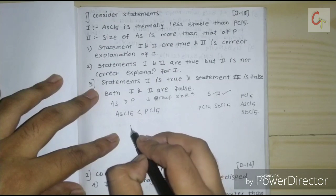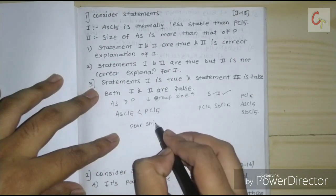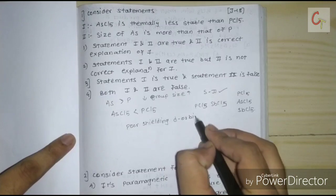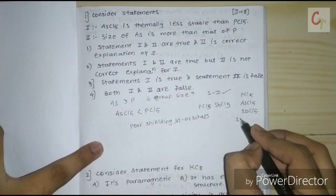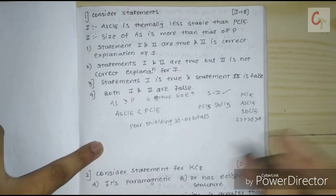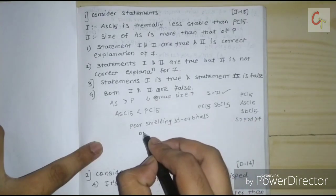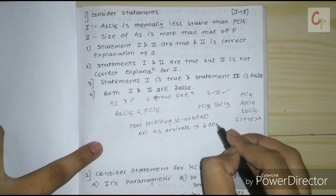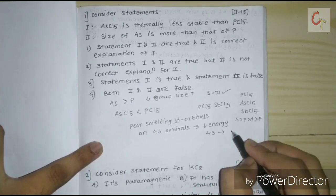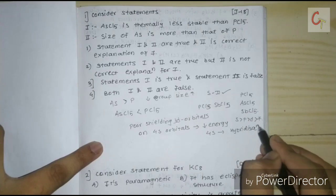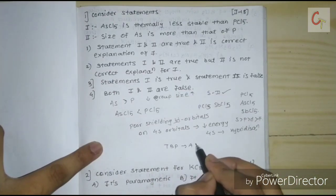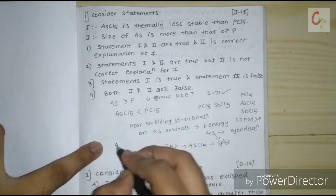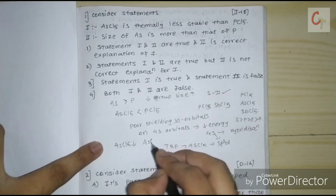The reason for AsCl5's lower stability is the poor shielding of the 3d orbital. The shielding order is s > p > d > f. Due to poor shielding of the 3d orbital on 4s, the energy of 4s decreases, so it doesn't take part in hybridization. Therefore, in the TBP geometry of AsCl5, sp3d hybridization occurs without 4s contribution, making arsenic pentachloride thermally less stable while AsCl3 is stable.